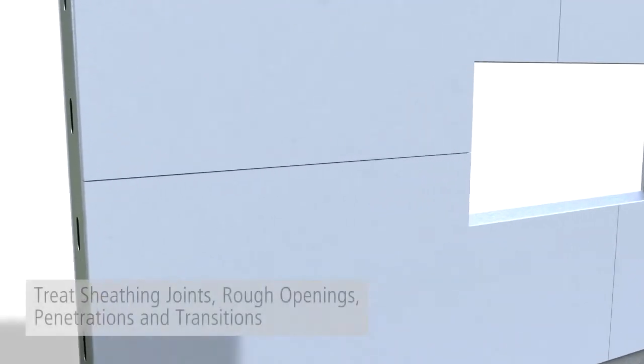The Stowe Guard assembly is applied in two steps allowing time to cure in between. First, the air barrier components are applied to the substrate by treating the sheathing joints, rough openings, penetrations, and transitions using the variety of interchangeable Stowe Guard joint treatments.